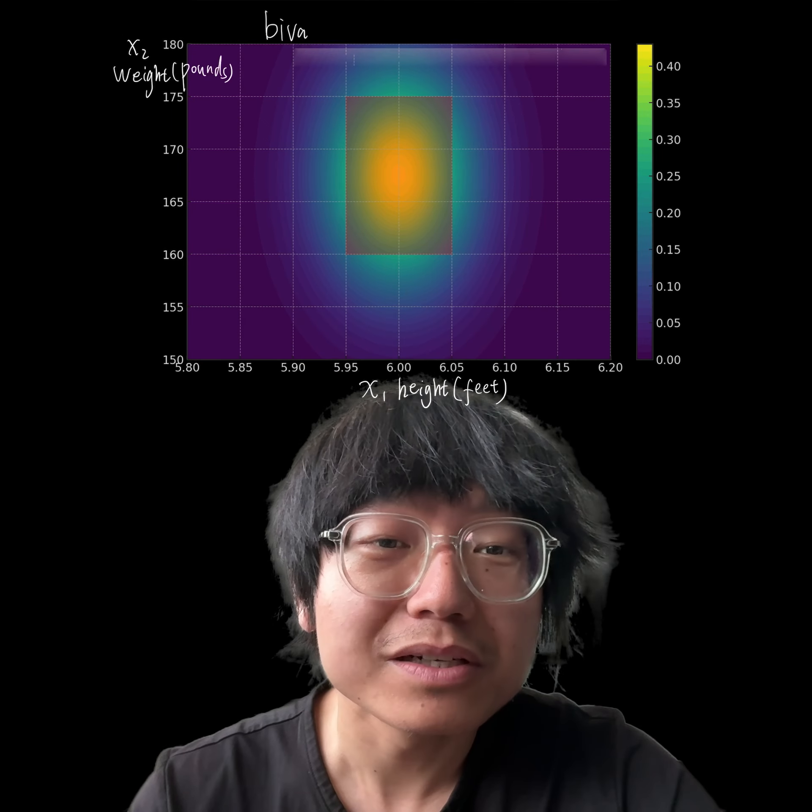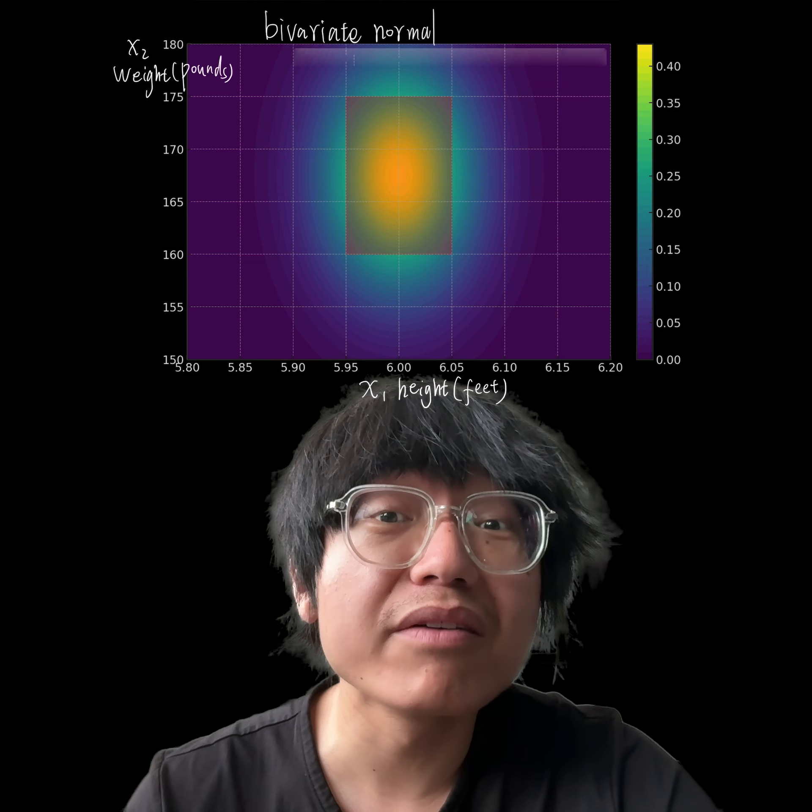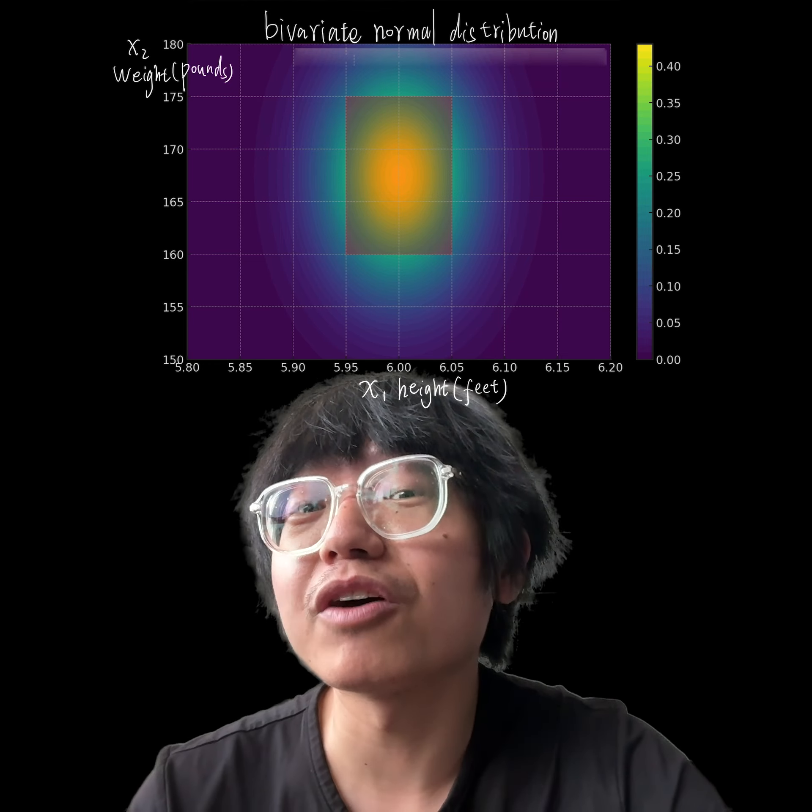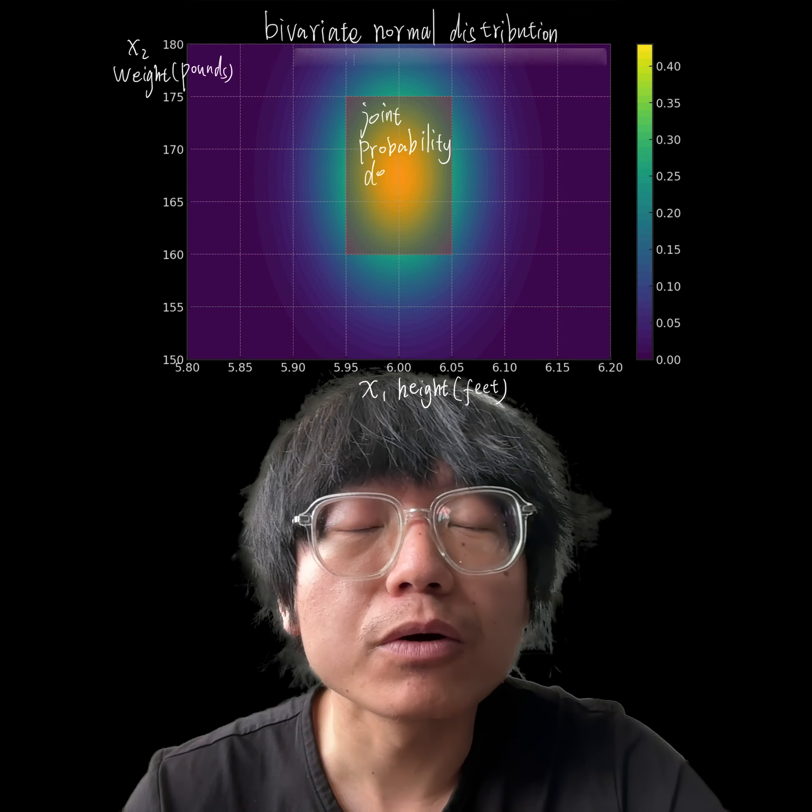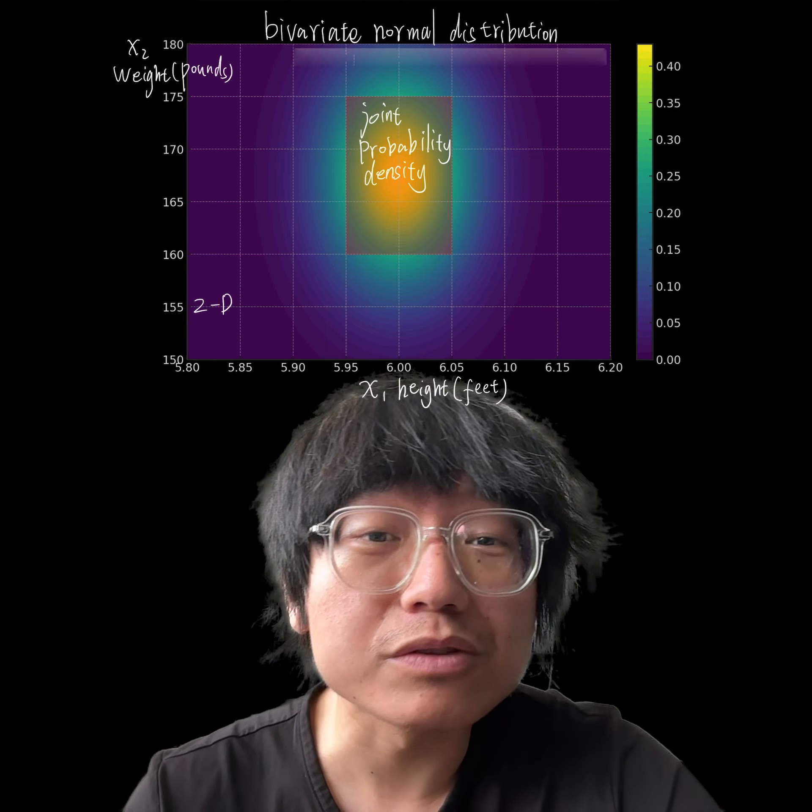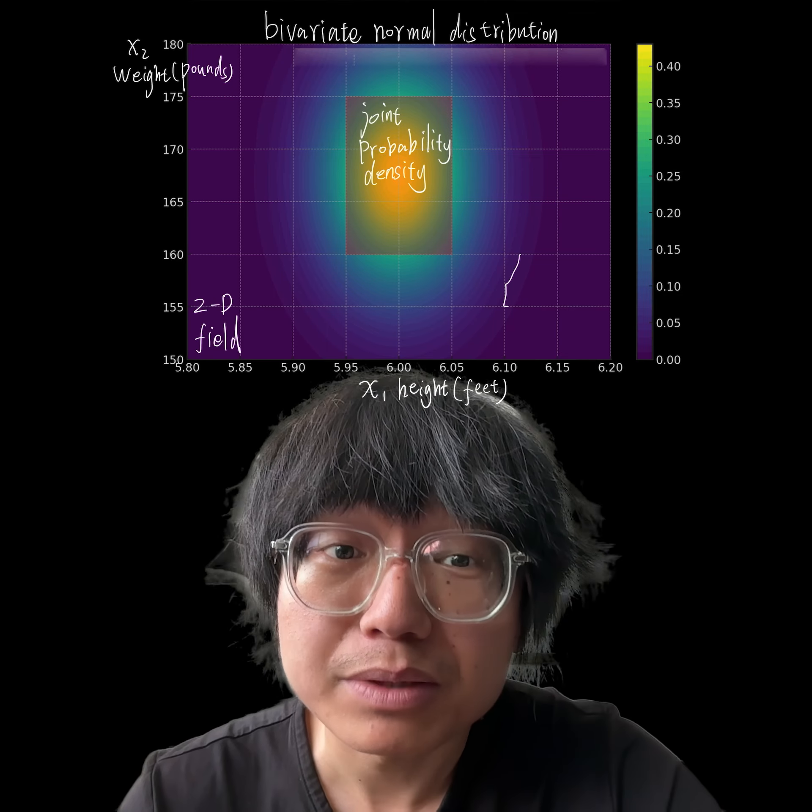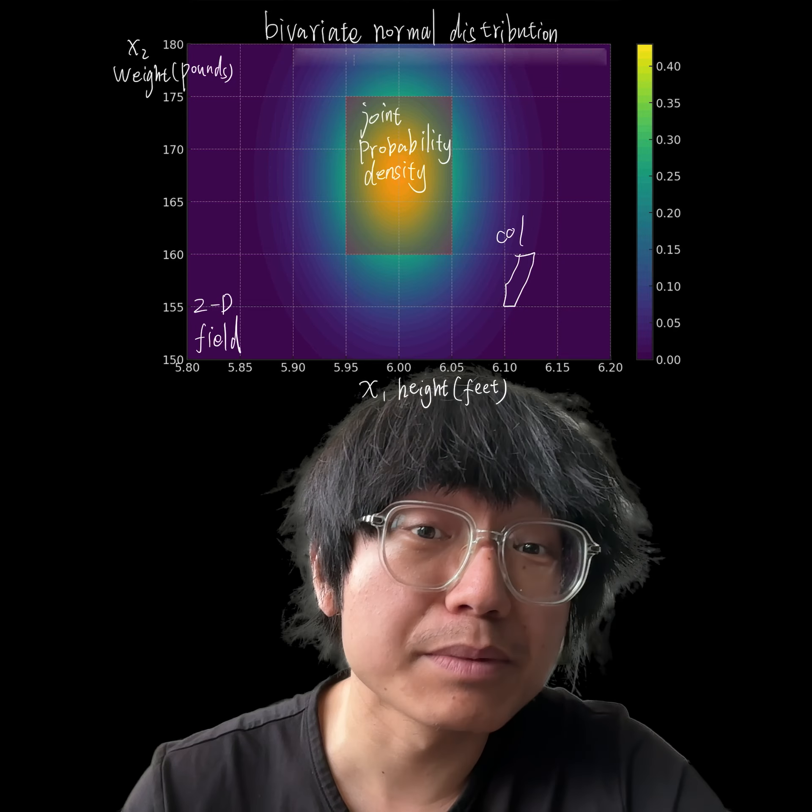For demonstration purposes, we assume a simple bivariate normal distribution for height and weight, which may not be entirely accurate for real-world data, but will serve well for illustrative purposes, highlighting the specified interval.